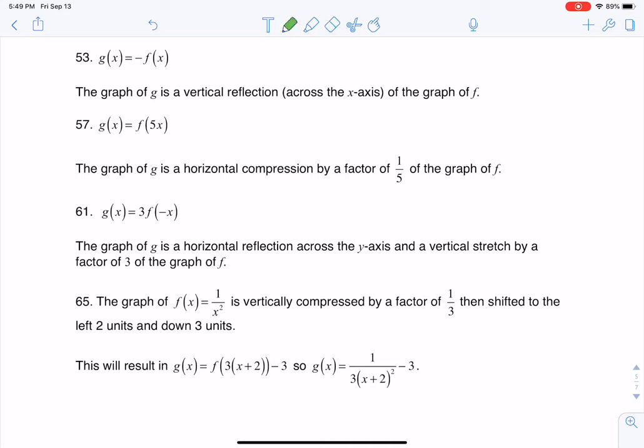So if I look at 53, anytime you have a negative symbol out in front of the function, so outside the grouping symbols, when I say grouping symbols, I'm referring to we have some parentheses, and inside those grouping symbols, those parentheses are the letter X. So this negative sign is outside the grouping symbol. So when that happens, anytime you see a negative there, it's going to be a reflection across the X-axis.